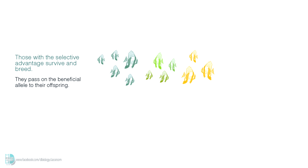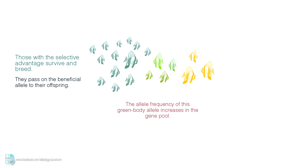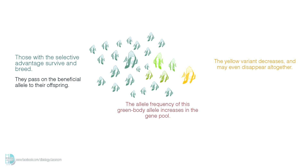Those who have a selective advantage will survive and breed. They pass on the beneficial allele which gives them the green colored body to their offspring. The allele frequency of this particular allele increases in the gene pool. After some time, the color of fish in that population will have a shift — more and more of them are green now, whereas the yellow color variant decreases. They may even disappear altogether.